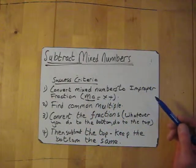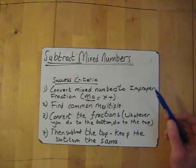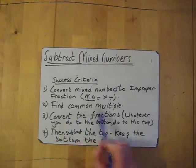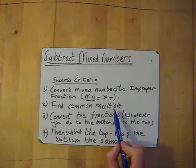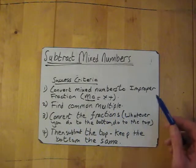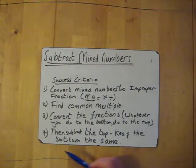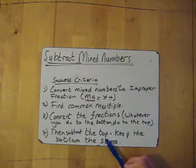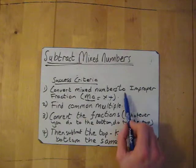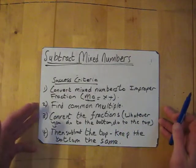There is a video related specifically to it if you wanted to go into a little bit more depth, but it's fairly straightforward. After you've converted from your mixed number to your improper fraction, you need to find your common multiple between the two fractions, then convert the fractions to the new common multiple — whatever you do to the bottom you have to do to the top — and then finally just subtract the top number and keep the bottom the same.